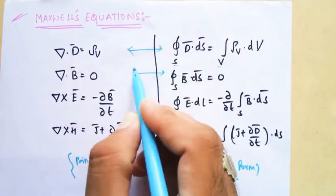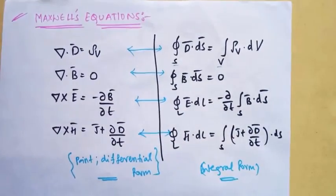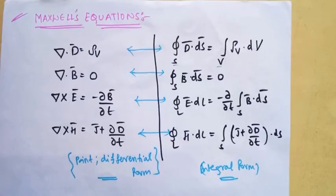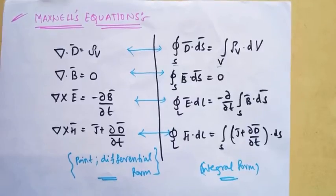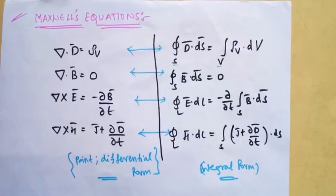There is no need to remember all eight equations. If you remember any set of four equations, you can easily obtain the other set — provided you are good with the two theorems: Stokes' theorem and the divergence theorem. In this video, we are going to discuss how the electromagnetic wave will propagate in different conditions.